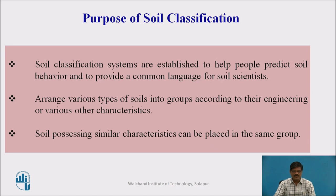Now, let us see what are the purposes of soil classification. Soil classification systems are established to help people predict soil behavior and to provide a common language for soil scientists. Another purpose is to arrange the various types of soil into groups according to their engineering or other characteristics, so that soils possessing similar characteristics can be placed in the same group.